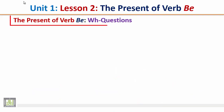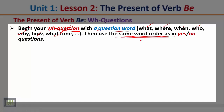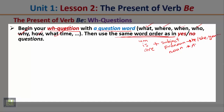So again, we start the yes-no question with any form of verb be — am, is, or are — then we need the subject pronoun, for example I, he, she, etc., then we complete our question and at the end we use a question mark. The Present of Verb Be: WH questions. Begin your WH question with a question word — for example, what, where, when, who, why, how, what time, etc. Then use the same word order as in yes-no questions: verb am/is/are plus the subject.